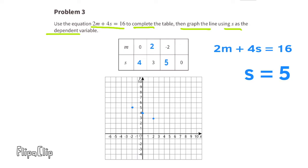Let's do the last one. The value for S is 0, so let's substitute a 0 for the S. Now it reads 2M plus 4 times 0, or 2M plus 0 equals 16. Divide both sides by 2. 2M divided by 2 equals 1M, and 16 divided by 2 equals 8. So when the value for S is 0, the value for M is 8.